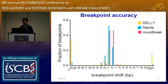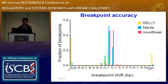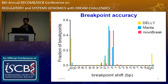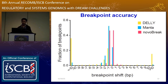Another important feature for structural variation detection is breakpoint accuracy. We also compared the top performers in this round. We found that NoBreak has the highest precision for breakpoint accuracies — about 99% of breakpoints fall within minus two to two base pairs when compared with the ground truth.